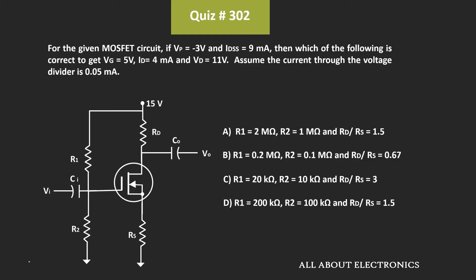In this question, we have been given this MOSFET circuit, and for the given circuit, we have been asked to find the values of the resistors such that this condition gets satisfied. That means for the chosen values of the resistors, the gate voltage VG should be equal to 5V, while the drain voltage VD should be equal to 11V, and the drain current ID flowing through the circuit should be equal to 4mA.